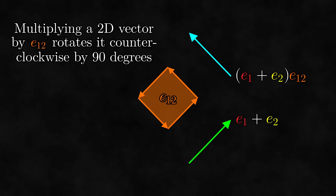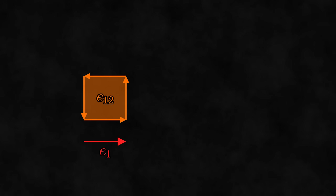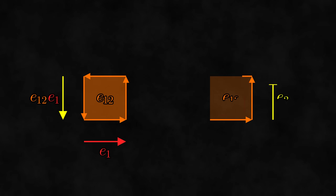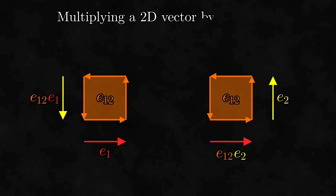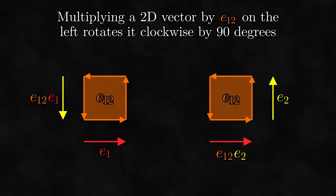But wait — the geometric product is not commutative. What happens if we multiply by e12 on the left? We already know what happens algebraically: e12 times e1 is minus e2, and e12 times e2 is e1. Looking at these results, it seems that multiplying by e12 on the left rotates by 90 degrees, but this time it's clockwise instead of counterclockwise. Again, this generalizes to all 2D vectors: multiplying by e12 on the left rotates by 90 degrees clockwise.